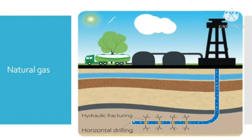Natural gas is always found above the oil in the oil wells. This gas is trapped inside the small spaces in underground rocks called reservoirs. Conventional natural gas can be extracted through drilling wells. Natural gas can also be found in reservoirs with oil and is extracted along with oil. This is called associated gas.